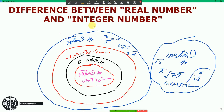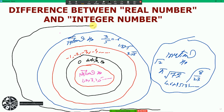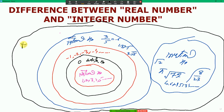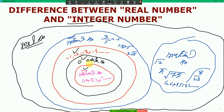Now let's come to the real number. The real number is the combination of rational numbers and irrational numbers — it is the union of rational and irrational numbers. All the rational numbers and irrational numbers together make up the real number system.